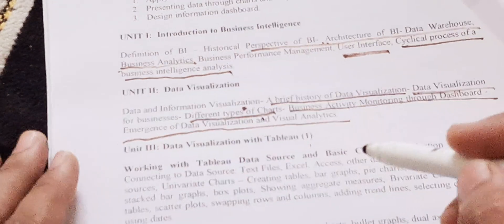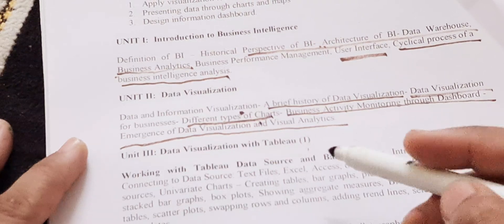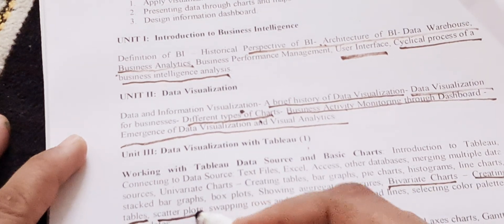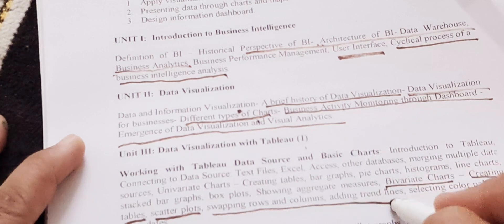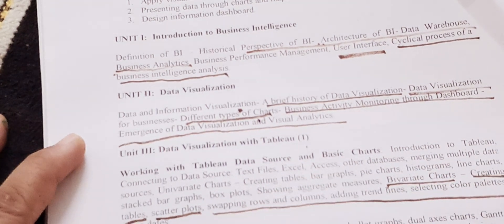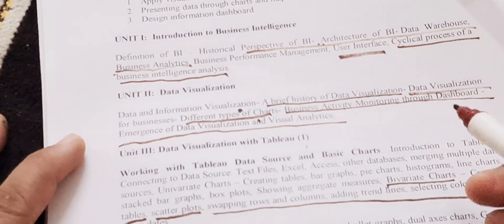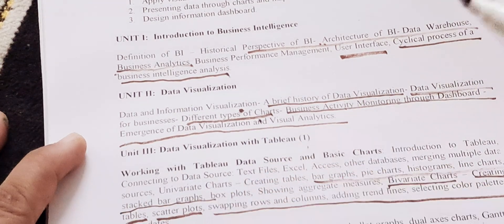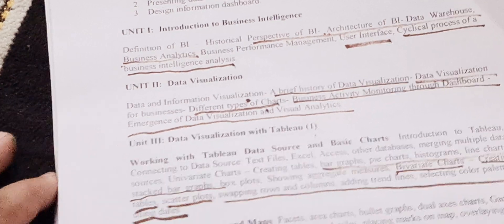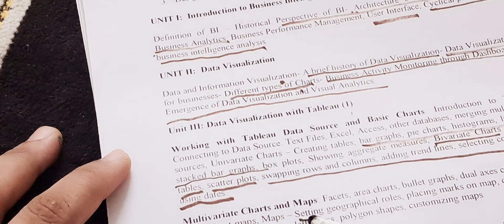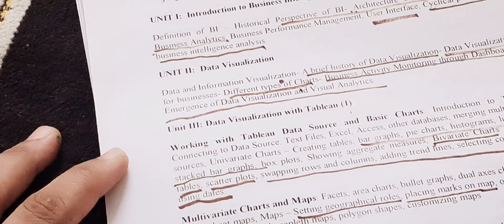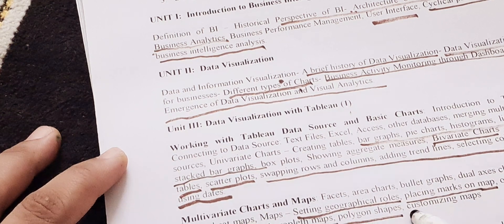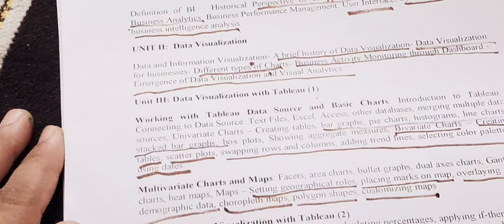In unit three, Data Visualization with W1, important topics include bivariate charts, creating tables, scatter plots, swapping rows and columns, adding trend lines, selecting color palettes, and using dates — these are very important for long answer questions. Also covered are bar graphs, pie charts, histograms, line charts, and stacked bar graphs, which can come for short or long answers. Setting geographical roles, placing marks on maps, overlaying demographic data, choropleth maps, polygon shapes, and customizing maps are also key topics.